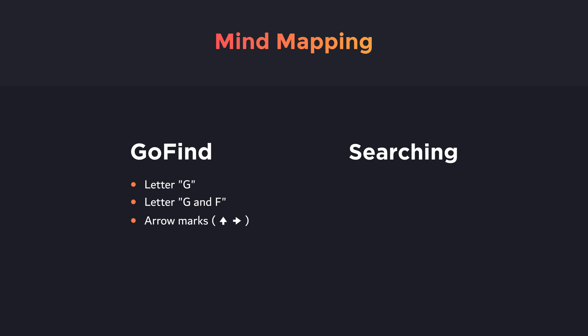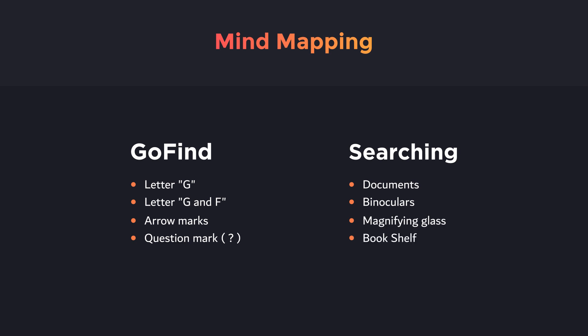If you want to emphasize on 'Find,' we can use elements like a question mark. For the searching aspect, if you want to show searching between documents, or if it's a thorough search, you can use elements like binoculars or a magnifying glass. And if you want to make the logo more comprehensive, you can use elements like a bookshelf.